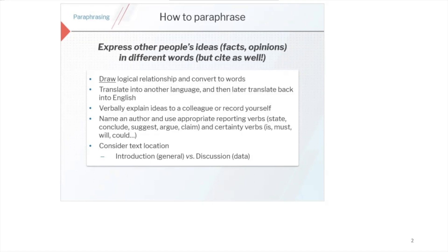It begins with paraphrasing, with reading, with understanding the work of other researchers in your subject area. You might be a physicist, a chemist, or a linguist — the words and phrases you use in your writing will be different to those someone else uses in theirs. So how can we start to think about drawing logical relationships between the papers that we read and converting those into our own words?